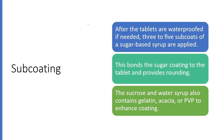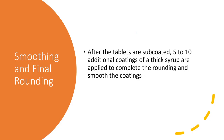Then you perform subcoating, which is where most of the mass is added. In this step, three to five subcoats of a sugar-based syrup are applied by spraying the sugar syrup solution onto your tablets. After subcoating, you add additional coatings of syrup and smooth the coatings by buffing the outermost layer.